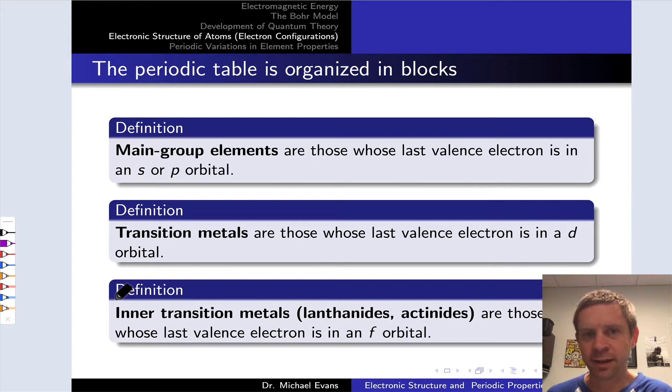Electron configuration gives us insight into the idea that the periodic table is really organized into blocks based on the subshell, the type of subshell, that's filling in that block.